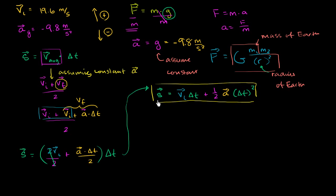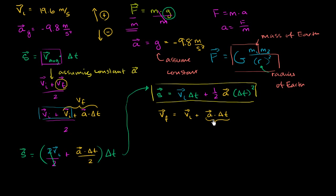We know our displacement as a function of time. We know what our final velocity is going to be as a function of time — we talked about it in the last video. Our final velocity is going to be our initial velocity plus our acceleration times change in time. This tells you how much faster or slower you're going compared to your initial velocity, giving your current velocity at that point in time.